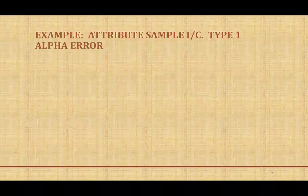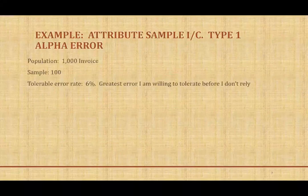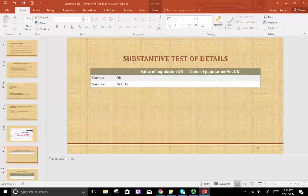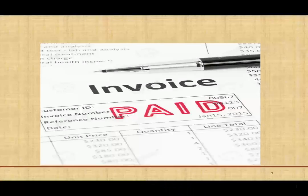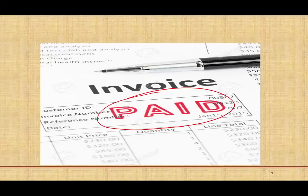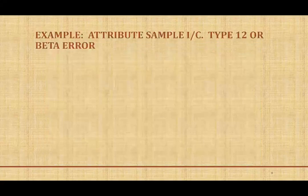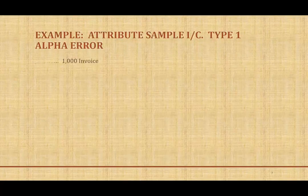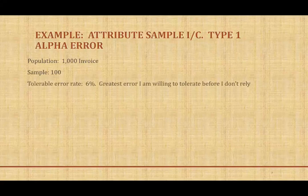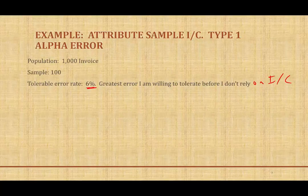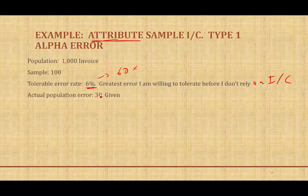Let's take a look at an example testing for control — attribute sampling. We're going to ask our staff to go to the invoices and determine if they are stamped paid. We have 1,000 invoices and selected 100 as a sample. We're willing to tolerate a 6% error rate — that's the greatest error before we don't rely on internal controls. The actual population error is only 30, meaning 3% error in the population, but we're willing to tolerate up to 6%.